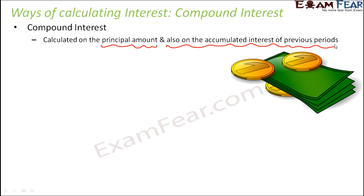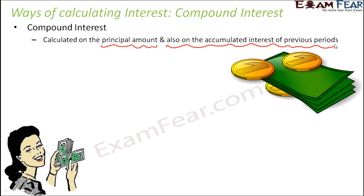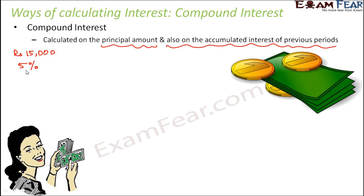Let me take an example — I think that would help you in better understanding. Let us take the same example where Sheila had kept Rs. 15,000 at the rate of interest 5%, but this time it is not simple interest. Here it is 5% compounded annually, meaning every year it is compounded by 5%, and the time period is 2 years.